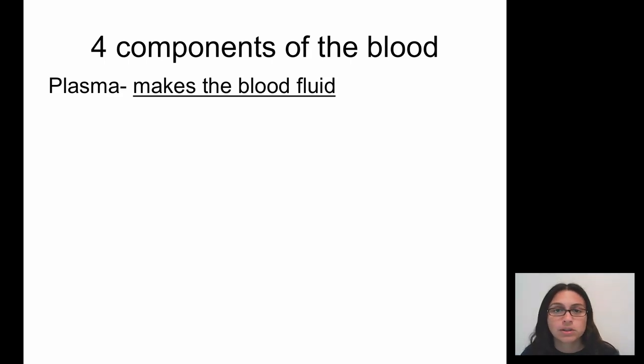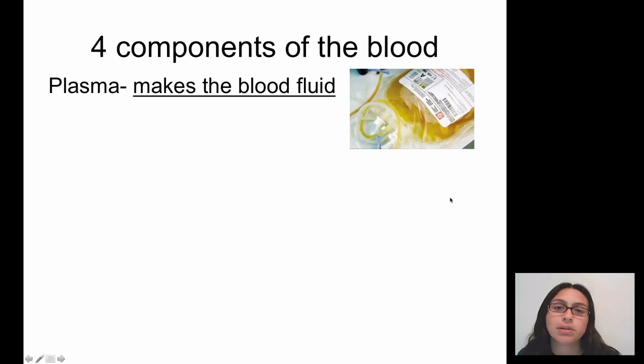Blood is traveling along in tubes, your blood vessels. Blood is the liquid floating through your blood vessels. So the plasma is the liquid portion of the blood. This is what actually makes the blood flow through your blood vessels.